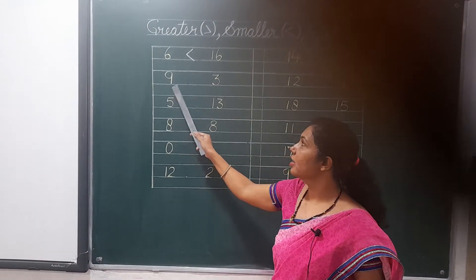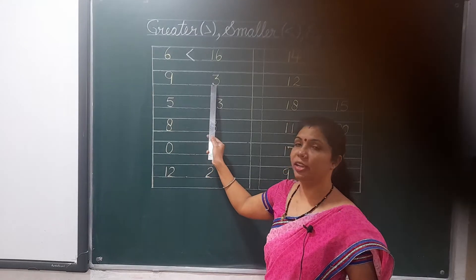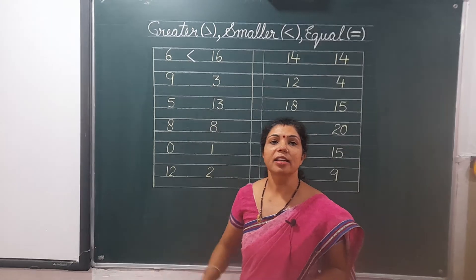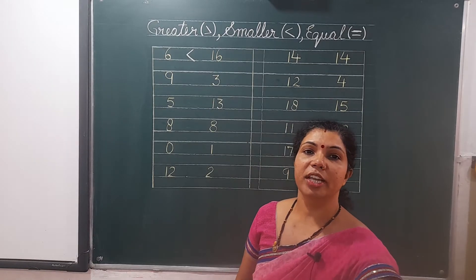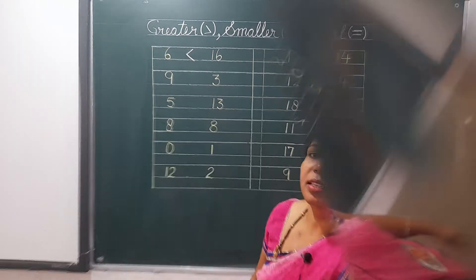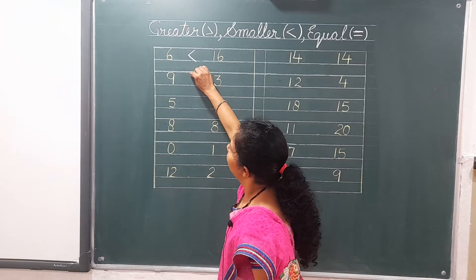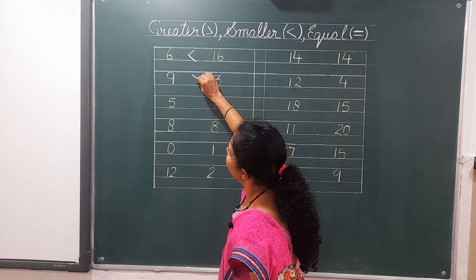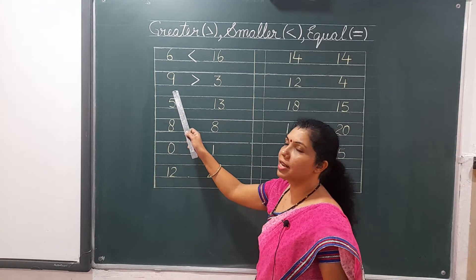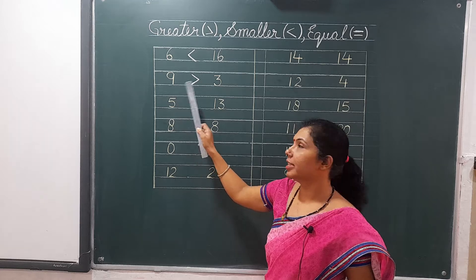Nine and three. Nine comes after three, so nine is greater than three. The mouth will be open towards nine, because nine is greater than three.